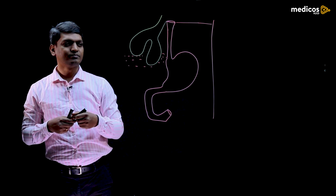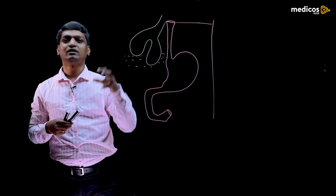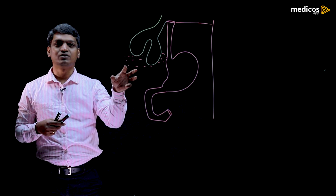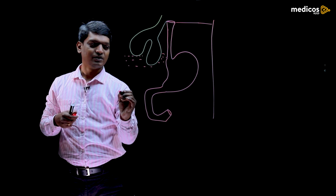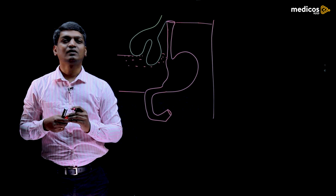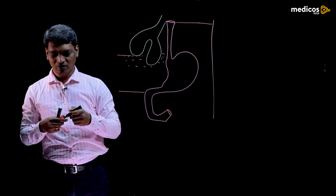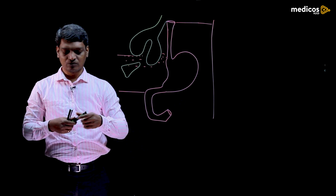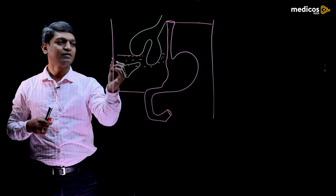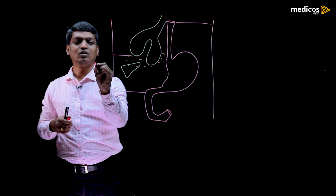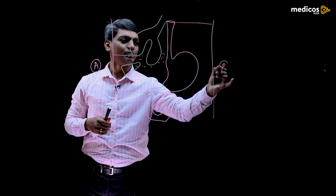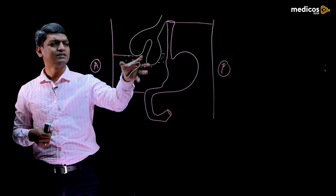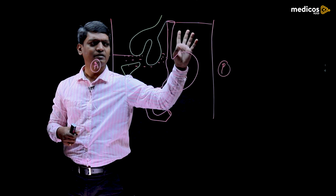In the septum transversum, just above it we have development of the heart, and within the septum transversum, it is going to give rise to the ventral mesogastrium. The development of the liver occurs here. Just imagine this is the anterior wall of the abdomen and this is the posterior wall of the abdomen and thorax — a common cavity, since we don't have a partition. The anterior wall is attached with the ventral mesogastrium, and the posterior wall with the mesoesophagus and mesogastrium.